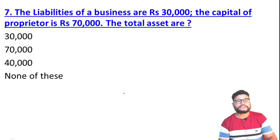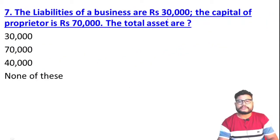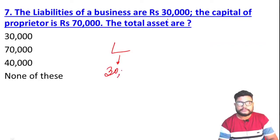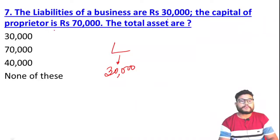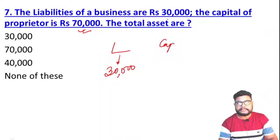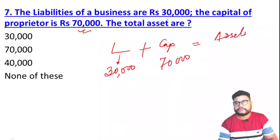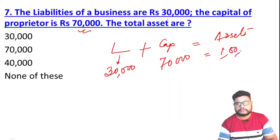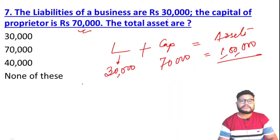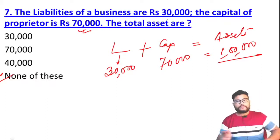Moving to the next question: The liabilities of a business are 30,000 and the capital of the proprietor is 70,000. Using the equation: Liabilities plus Capital equals Assets. Adding them: 30,000 plus 70,000 gives total assets of 1 lakh. Since there is no option for one lakh, the answer is 'None of these'.